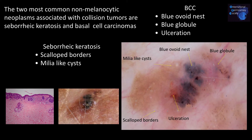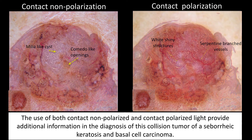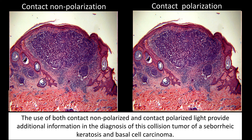The two most common non-melanocytic neoplasms associated with collision tumors are seborrheic keratosis and basal cell carcinomas. Here we see a neoplasm characterized by scalloped borders and milia-like cysts — the seborrheic keratosis — and blue ovoid nest, blue globules, and ulceration — the basal cell carcinoma. The use of both contact non-polarized and contact polarized light provided additional information in the diagnosis of this collision tumor, confirmed by histology.